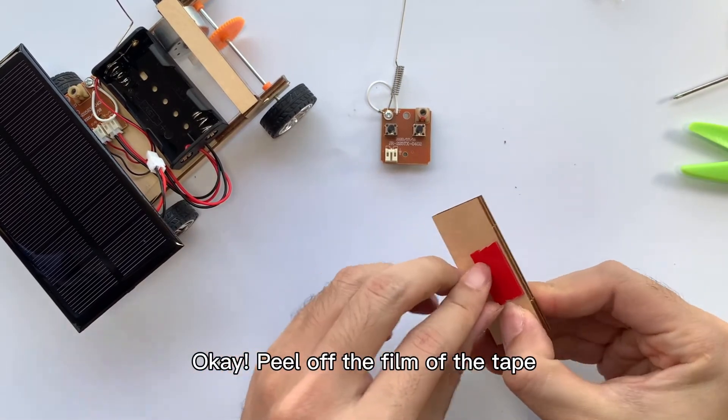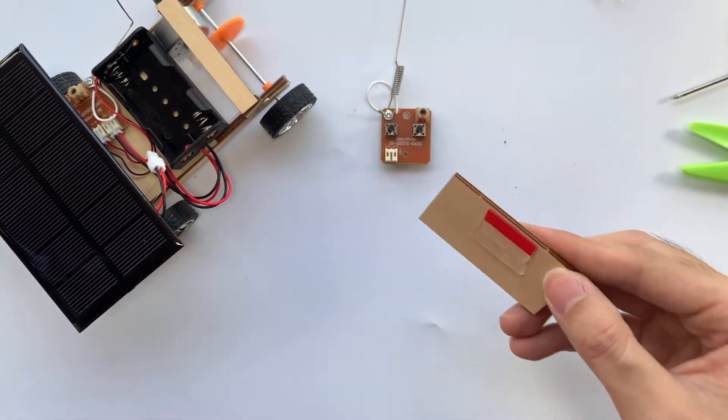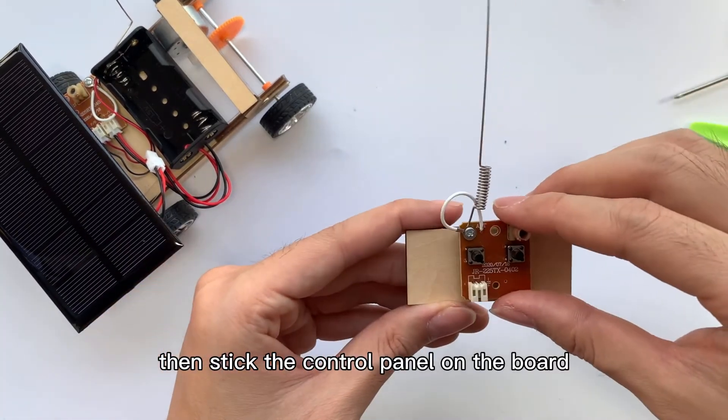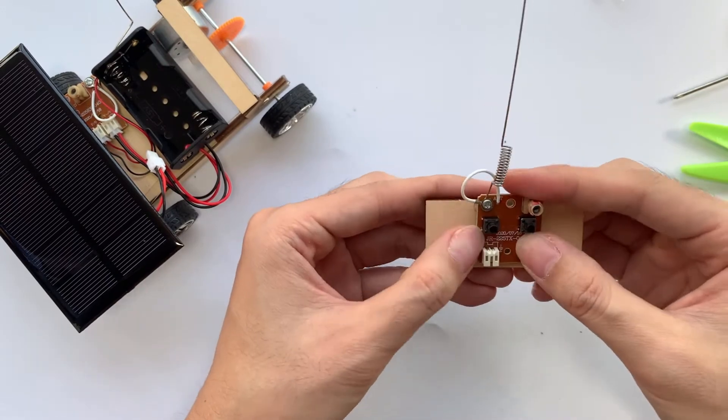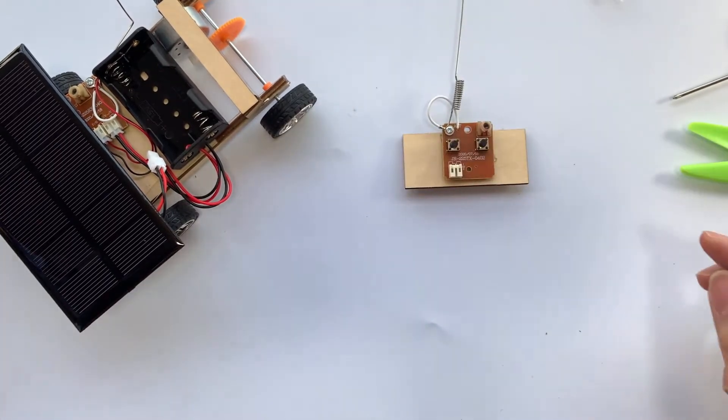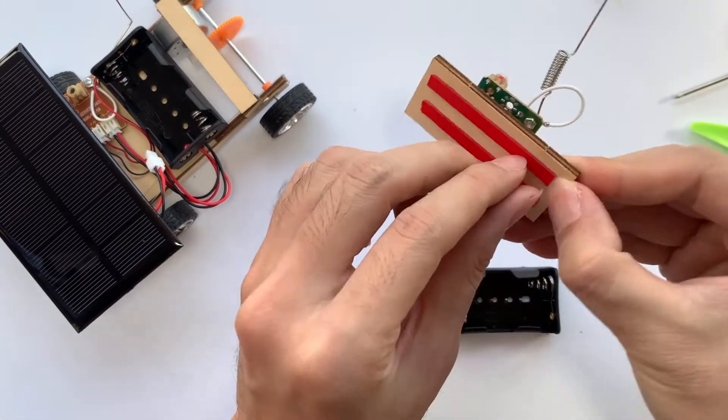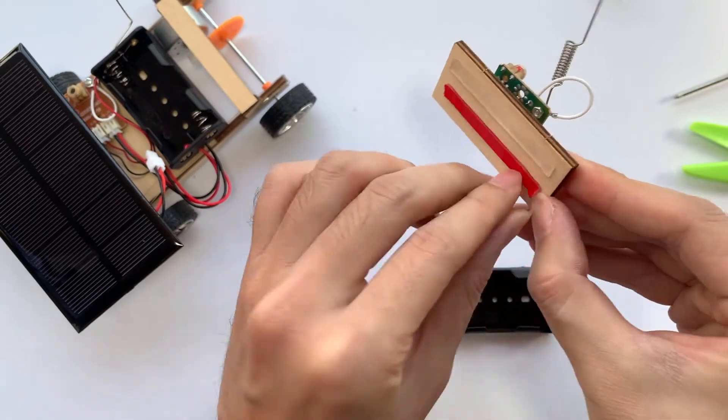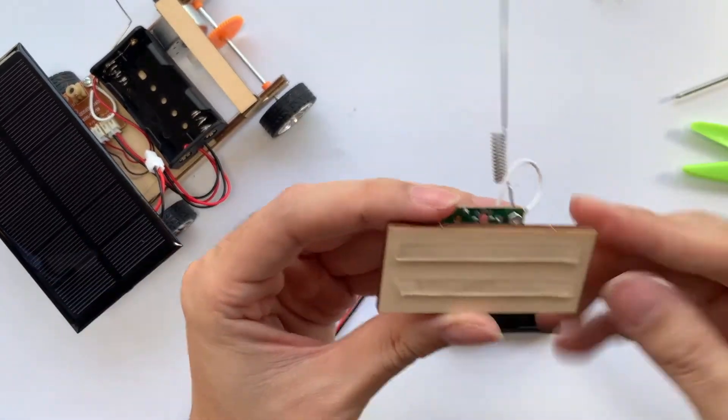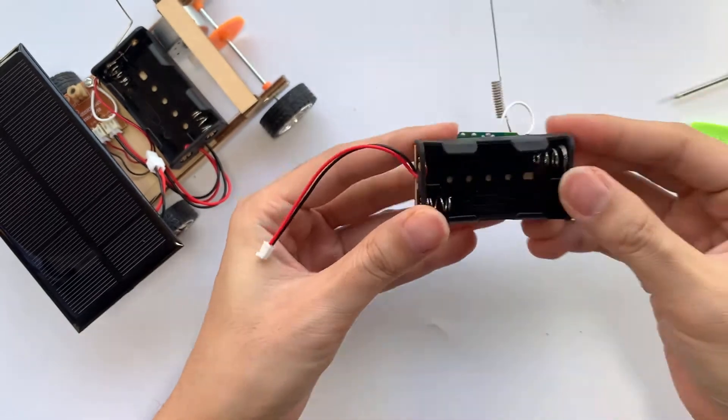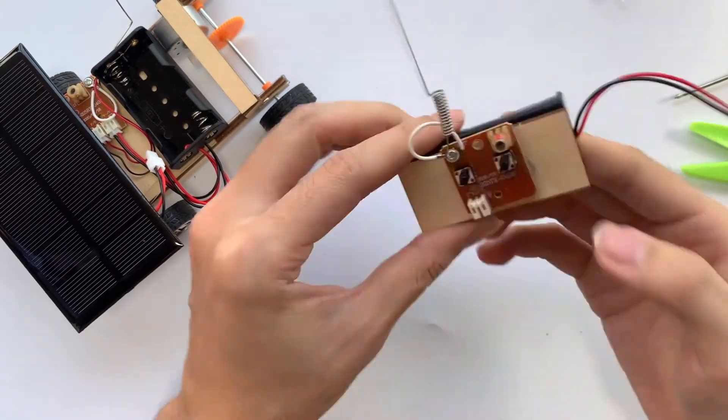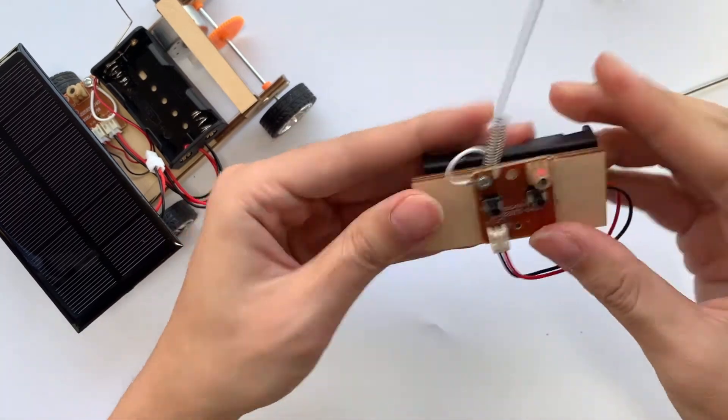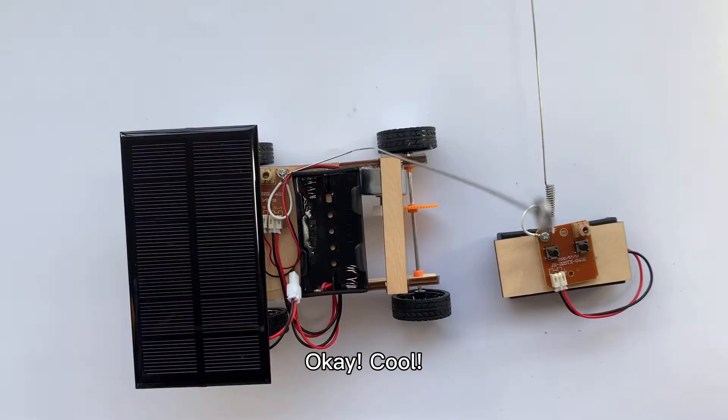Okay. Peel off the film of the tape, then stick the control panel on the board. It fits perfectly. And then the battery case for the other side. Looks good. Plug the wire into the socket on the panel. Okay, cool.